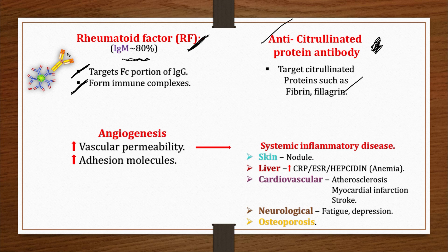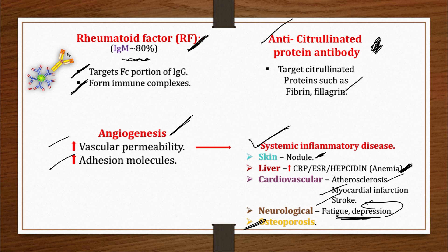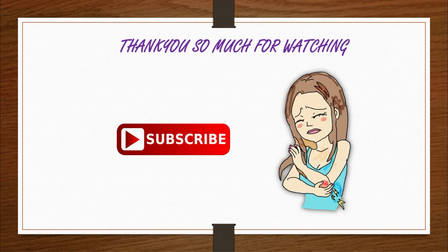Rheumatoid arthritis is a systemic inflammatory disease due to angiogenesis, increased vascular permeability, and upregulation of adhesion molecules. This allows it to affect any part of the body: the skin causing nodules; the liver leading to elevated ESR, CRP, and hepcidin; anemia; cardiovascular complications like atherosclerosis, myocardial infarction, and stroke; neurological manifestations like fatigue and depression; and osteoporosis.